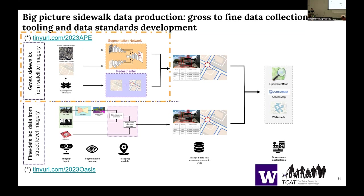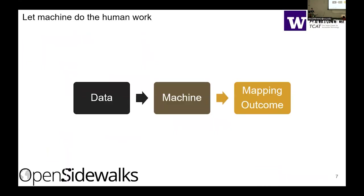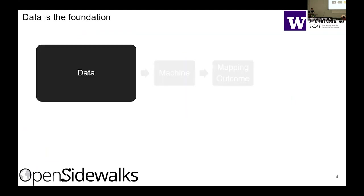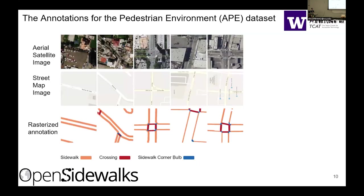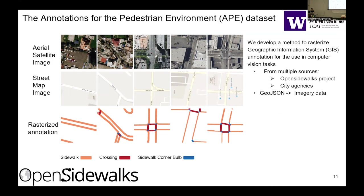I will start by introducing the first subset of our project. The core idea of our solution is to let the machine do the human work, and data is the foundation of any machine learning approach. Unfortunately, currently there are no large datasets that specifically target the pedestrian environment. So as the first step of our solution, we introduce the annotation for the pedestrian environment dataset. We display methods to rasterize the GIS annotations from multiple sources and multiple geographic areas.